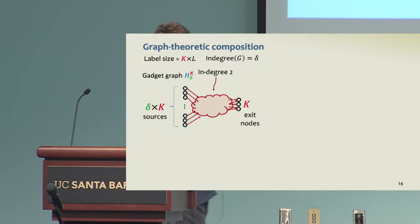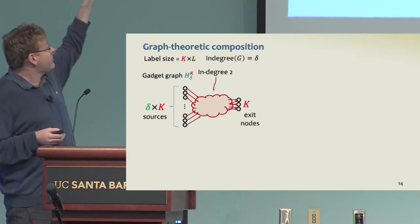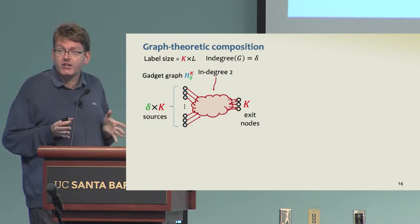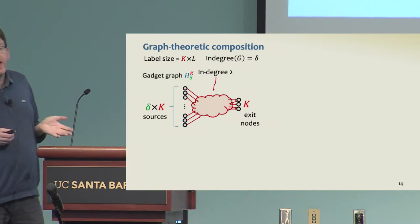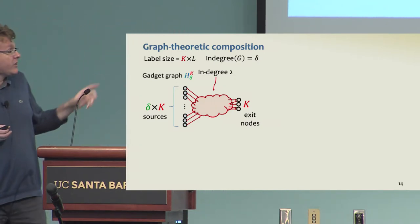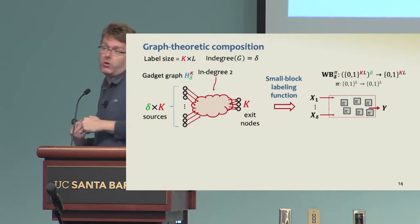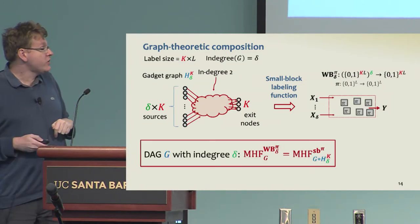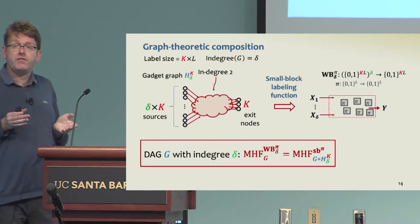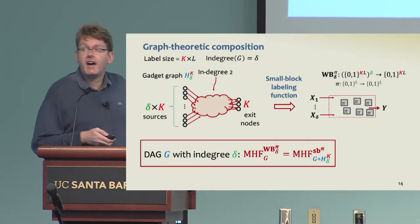What we're going to do is look at wide block labeling functions that are also built out of DAGs. In particular, the label size is K times L, and we look at graphs with some in-degree delta. Now we build our labeling function from a gadget DAG H, which is going to have K times delta sources, and K designated nodes that are exit nodes corresponding to the outputs, and then actually have constant degree, in-degree 2. We compile this into an actual labeling function by using the small block labeling function we defined before. The advantage is if we look at the memory hard function defined by a base graph G with this wide block labeling function, this is equivalent to a function defined by a composed graph with the basic graph and the gadget graph for the small block labeling function, which we can study with the theorem we had before.